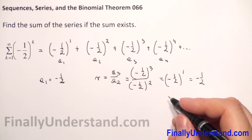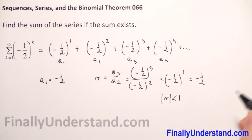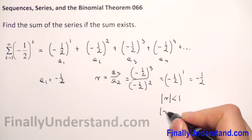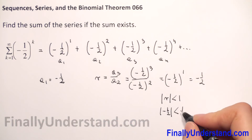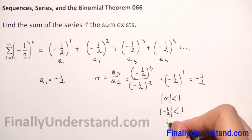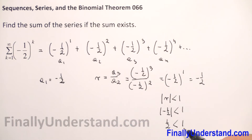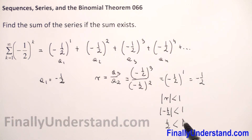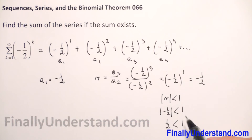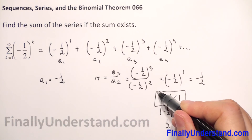When the absolute value of r is less than 1 — in our case r is negative 1 half, and the absolute value of negative 1 half is 1 half, which is less than 1 — the infinite geometric series converges. The sum exists only when the absolute value of r is less than 1.